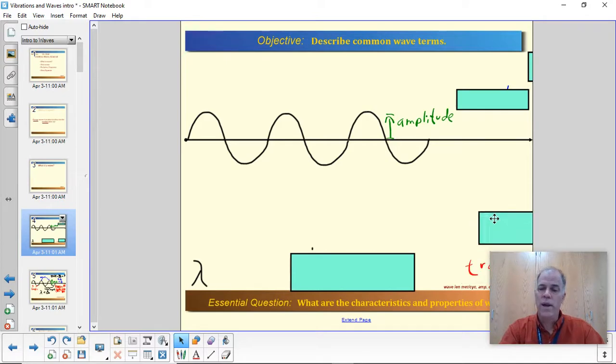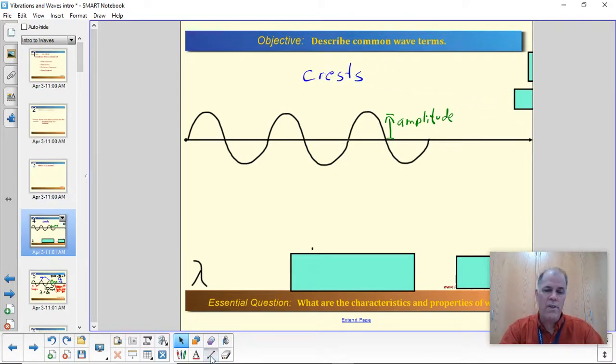Since I've mentioned the word crest, I may as well put that in there as well. The crests are the peaks of the waves, the highest point, the maximum displacement. That really is the best way to describe it, the maximum displacement of the medium as the wave passes. And back to the amplitude again, the amplitude is the distance from the neutral position to the crest. So it's not from this low point up to the crest. It's from the neutral position to the crest.